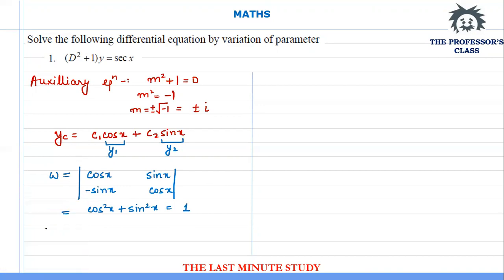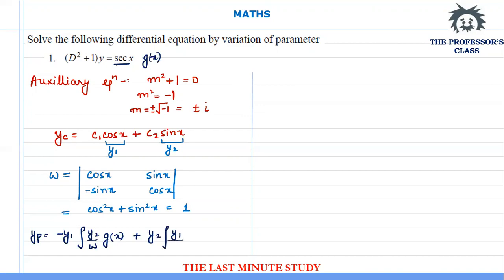Now I'll substitute the values into the variation of parameters equation: yp equals y1 times the integration of (y2/W)·g(x) dx, plus y2 times the integration of (y1/W)·g(x) dx.